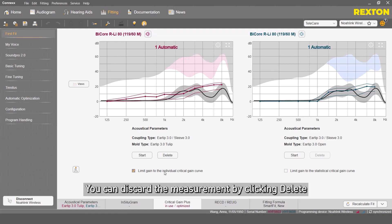You can discard the measurement by clicking Delete or decide to not use the measured critical gain by not checking this box.